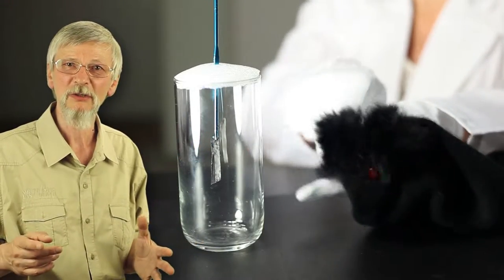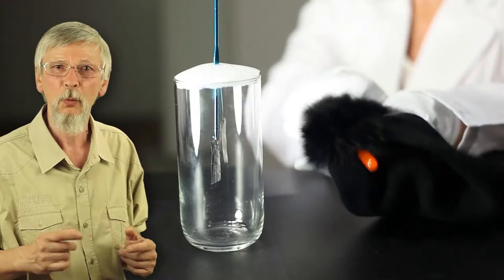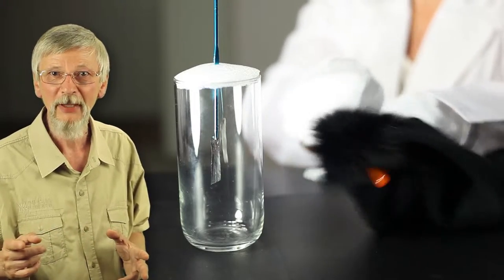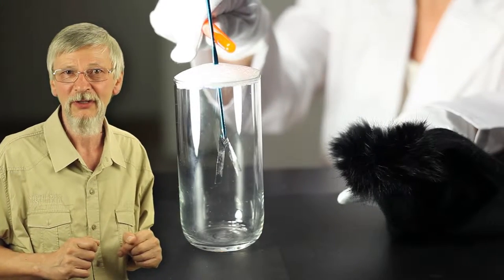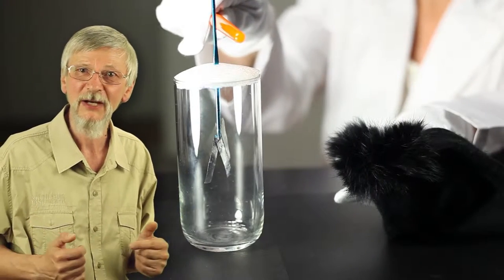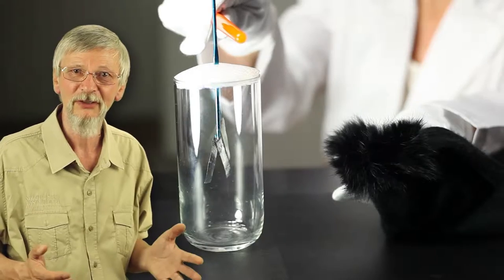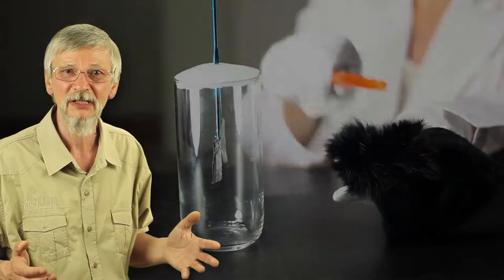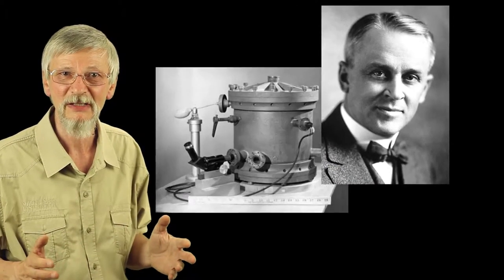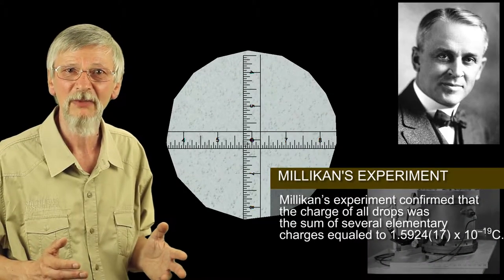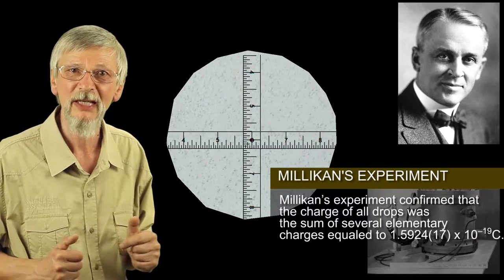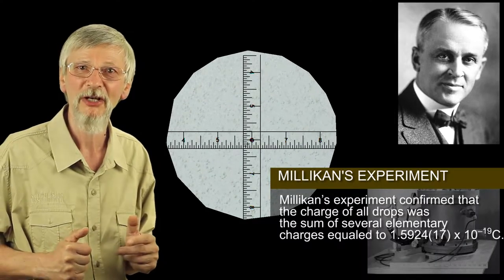The first device used to quantify electricity was developed by Coulomb. It consisted of two pieces of aluminum foil inside a glass container. Since then, measuring devices have greatly improved, and now they can measure in units as small as nanocoulombs. Using very precise measuring devices, American physicist Robert Andrews Millikan and Russian physicist Abraham Ioffe were independently able to measure the electric charge of an electron.